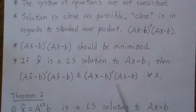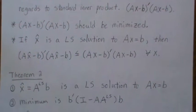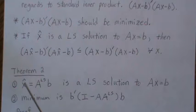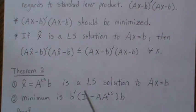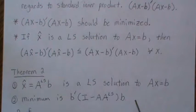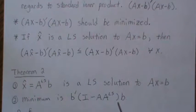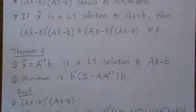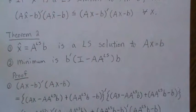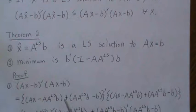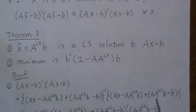If x̂ is a least squares solution, the length of that vector is smaller than or equal to the length for all other x. Note the equal sign, which means the least squares solution may not be unique. Theorem two: let x̂ equal the least squares inverse of A times b. We claim this is a least squares solution, and also note that the minimum possible value for the length of this vector is given by this expression.